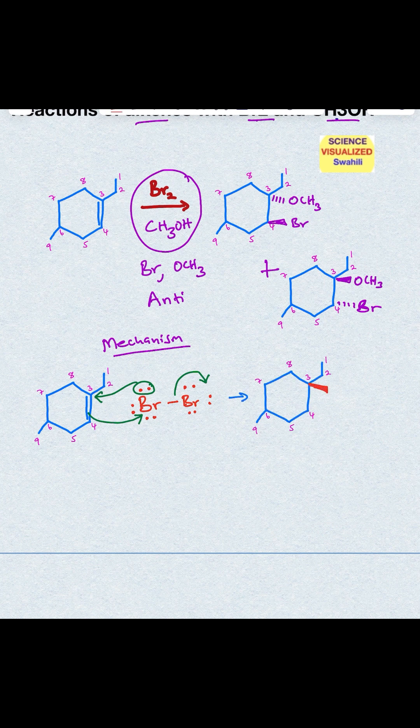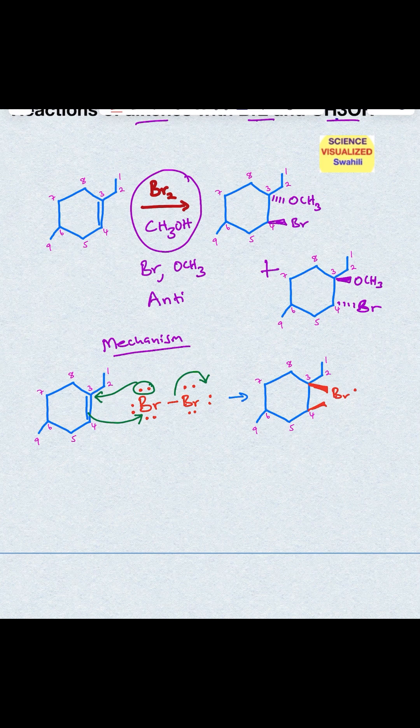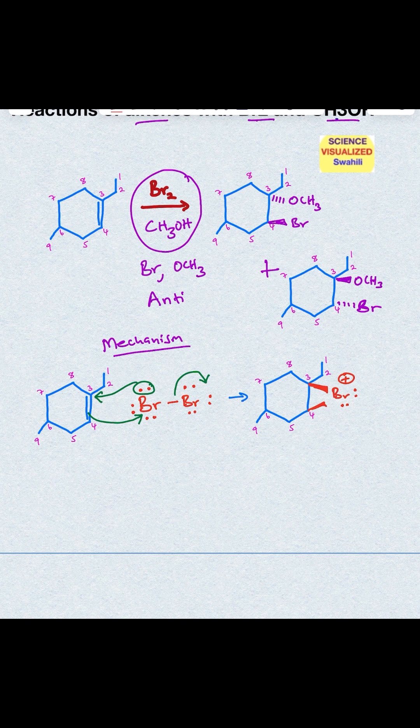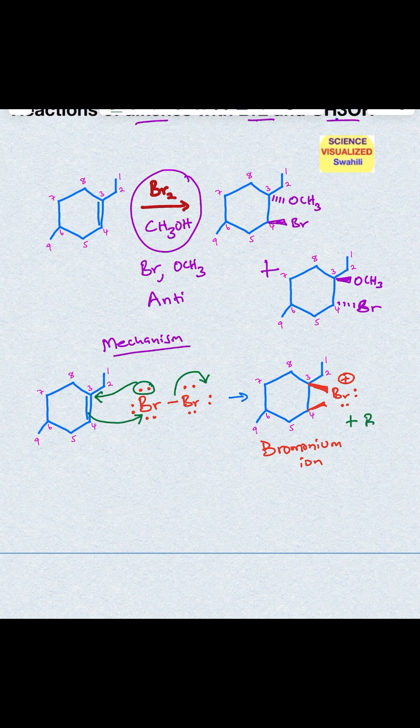So you end up with a Br adding from one side, but now you've used one of the lone pair of electrons on the Br, and therefore you have a formal positive charge, and that's called bromonium ion. And at the same time you have a Br minus that was kicked out.